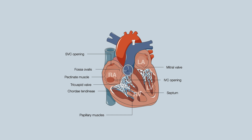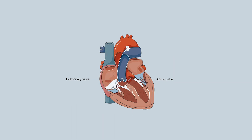In the left atrium, there are openings for the pulmonary veins. Separating the atrium and the ventricle is the mitral valve, which is a bicuspid valve. In this view, one can appreciate the semilunar valves of the pulmonary and aortic valve. Note the irregular muscle ridges of the ventricles, known as trabeculae carneae.